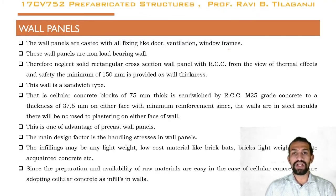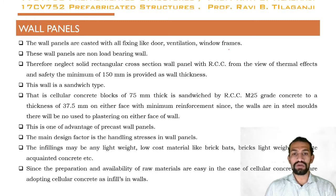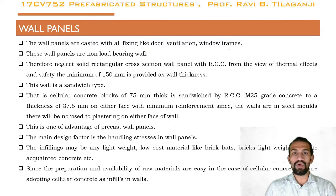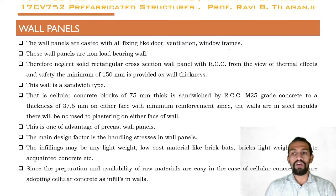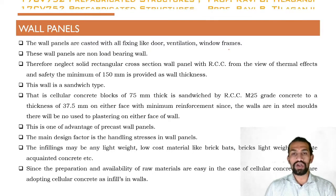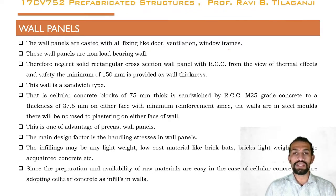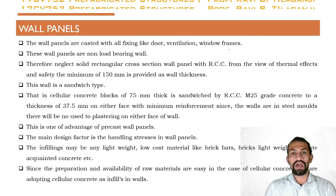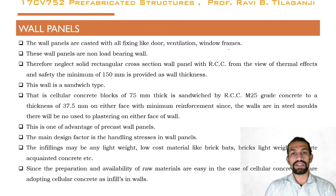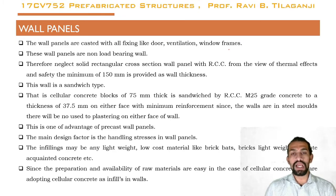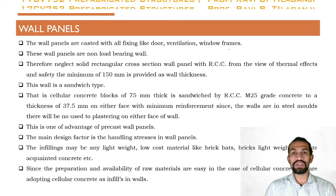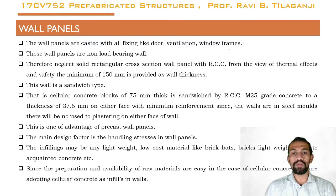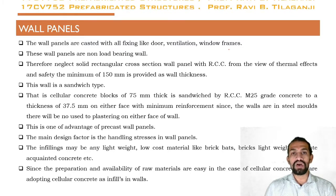Both types of properties can be achieved by the sandwich type of prefabricated wall. Cellular concrete blocks of 75 mm thick are sandwiched by RCC M25 grade concrete to a thickness of 37.5 mm on either face with minimum reinforcement. Since the walls are cast in steel molds, there is no need for plastering on either face.